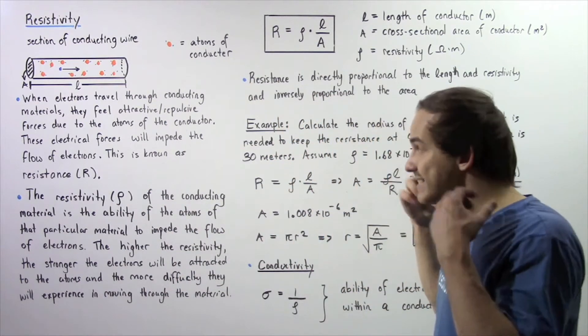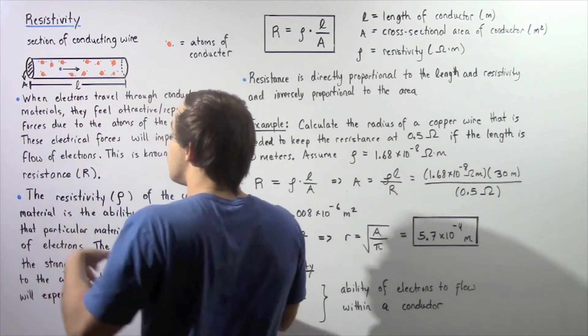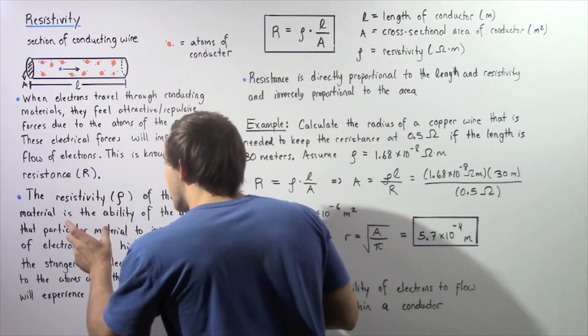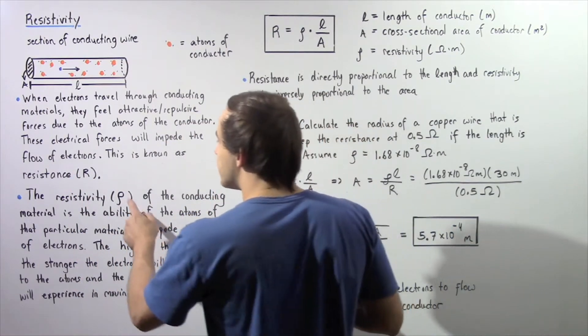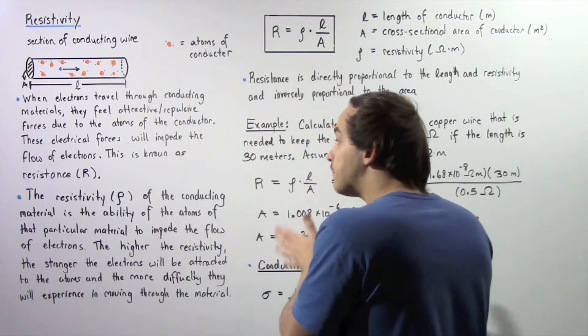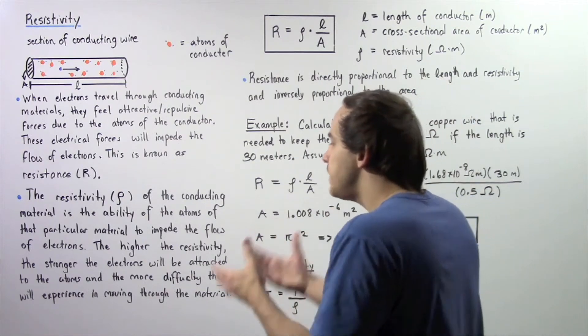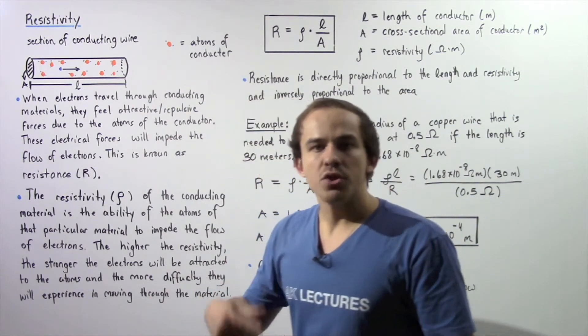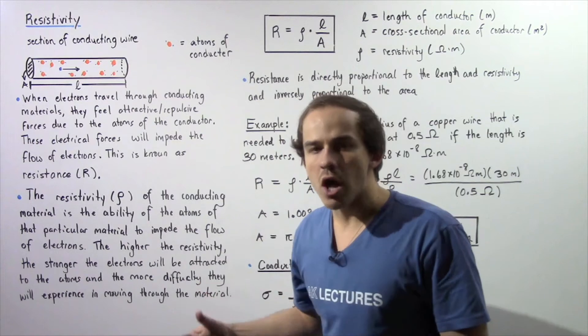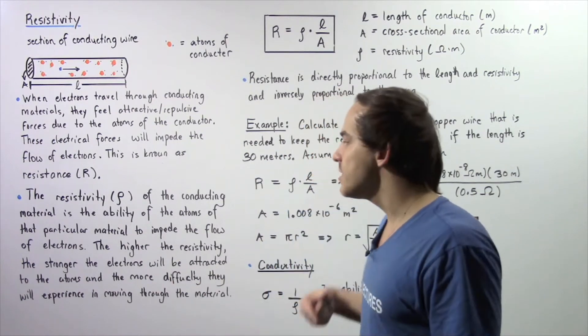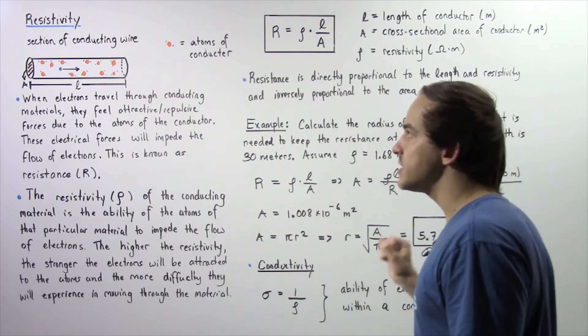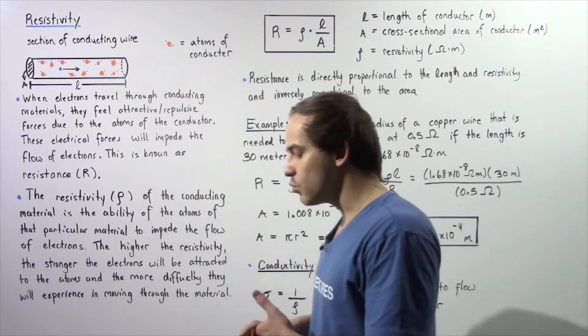Resistance is not the same thing as resistivity, although these concepts are related. The resistivity of a conducting material given by the Greek letter rho (ρ) is the ability of the atoms of that particular conducting material to impede the flow of electrons. The higher our resistivity, the stronger the electrons will be attracted to the atoms and the more difficulty those electrons will experience in moving through that particular conducting wire.